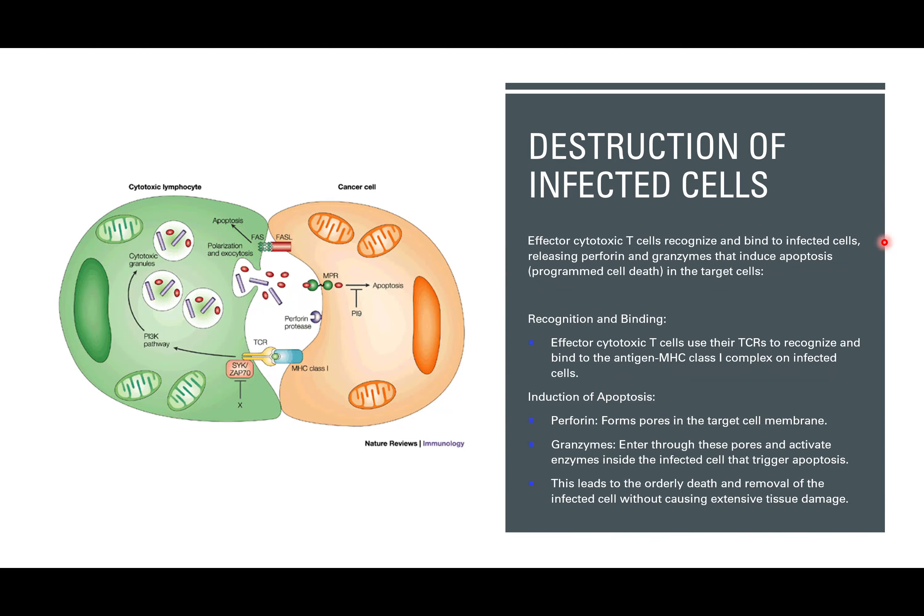That is generally what we call apoptosis — programmed cell death. So the effector cytotoxic T cell binds, infiltrates the cell with its granzymes and perforin, and destroys the cell. Perforins make the pores within the membrane itself, and then the granzymes trigger the entire apoptosis.